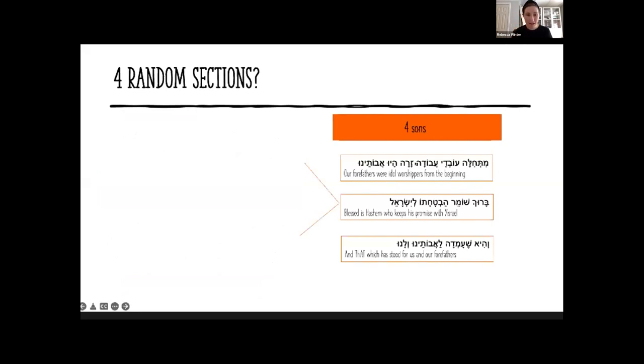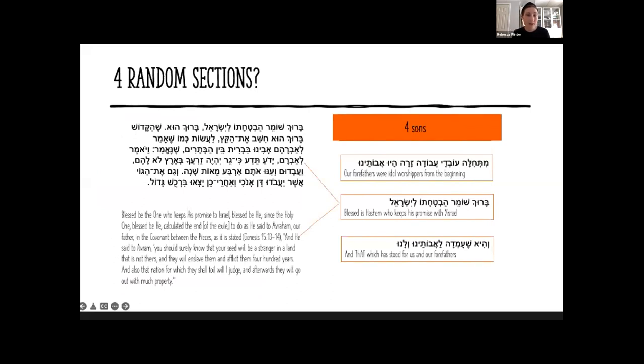Let's march forward now. I'd like to skip the Mitchila section just for a second, we will come back. Moving on to Baruch Shomer Havtachato L'Yisrael, this text is about blessing Hashem, thanking Hashem for keeping his promise to Israel. It goes through the Brit Bein HaBetarim, the famous covenant that Hashem makes with Avraham.